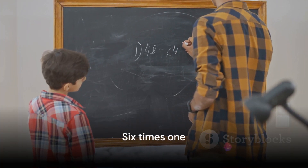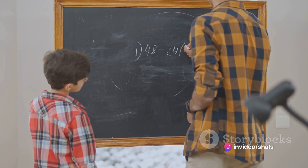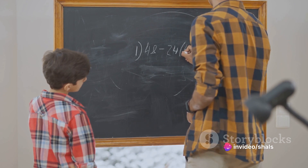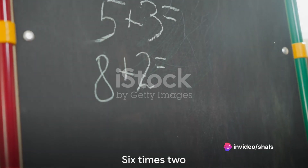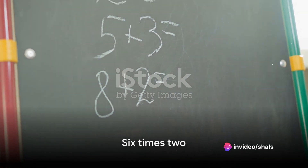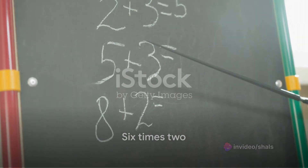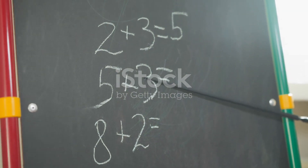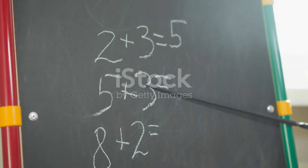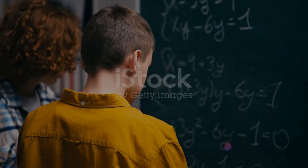Six times one equals six. It's straightforward — you're merely taking one group of six. Moving forward, six times two equals twelve. Think of it as having two groups of six. If you count each group, you'll find that together they make twelve.